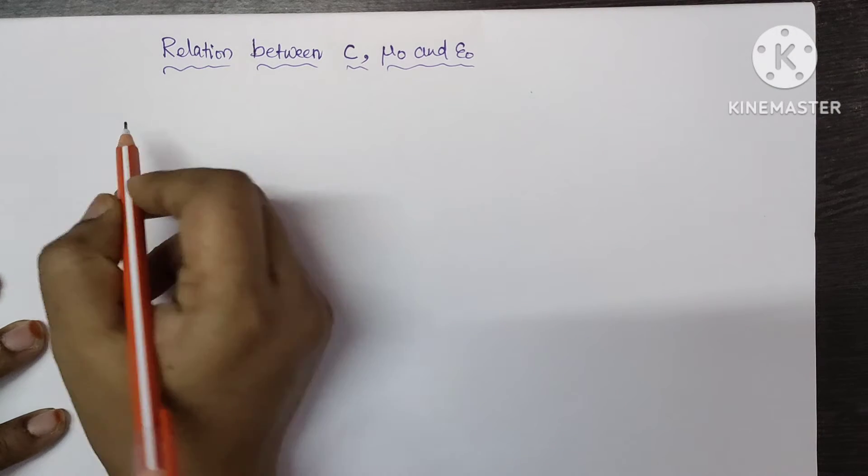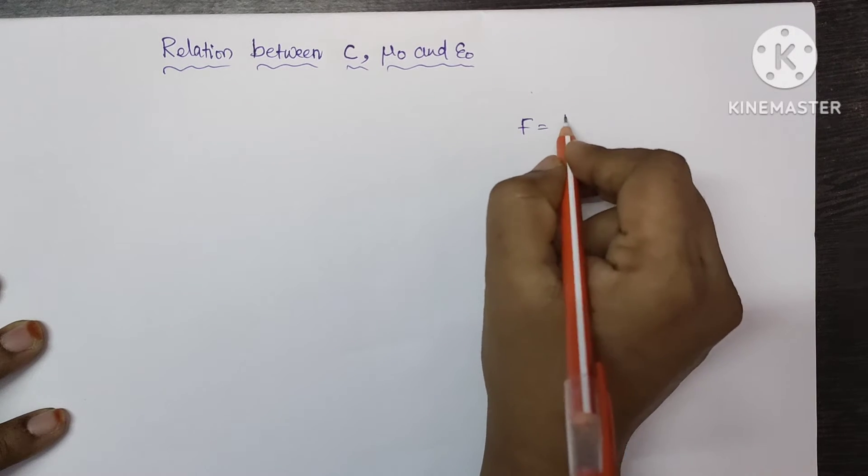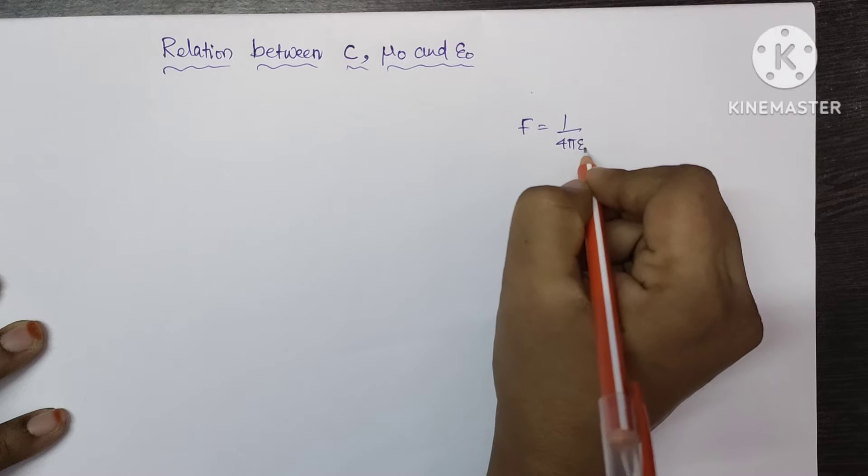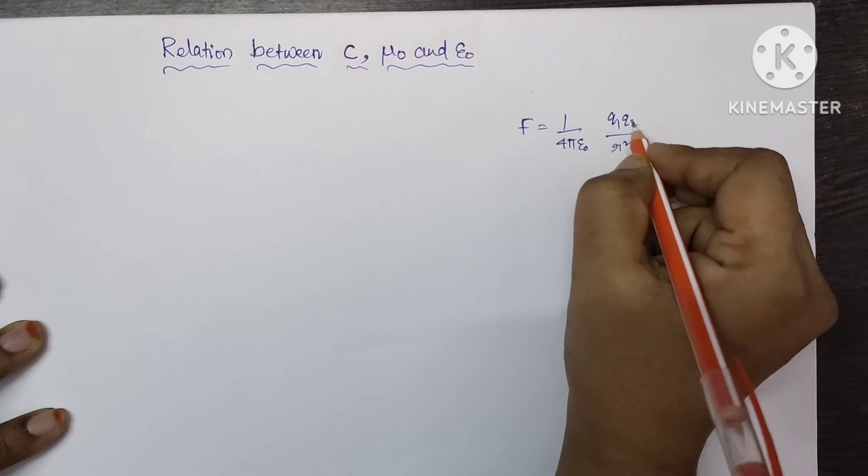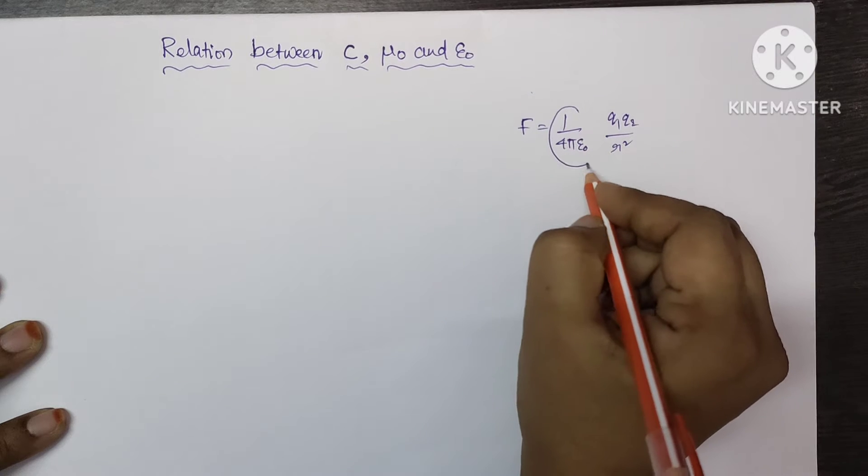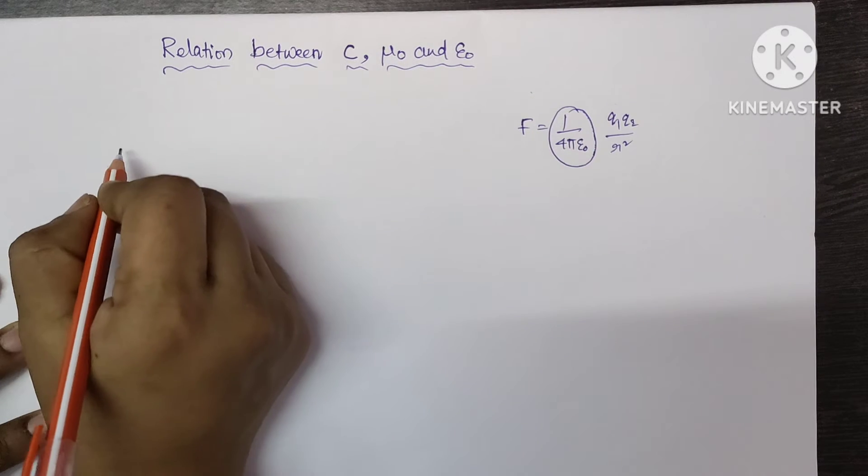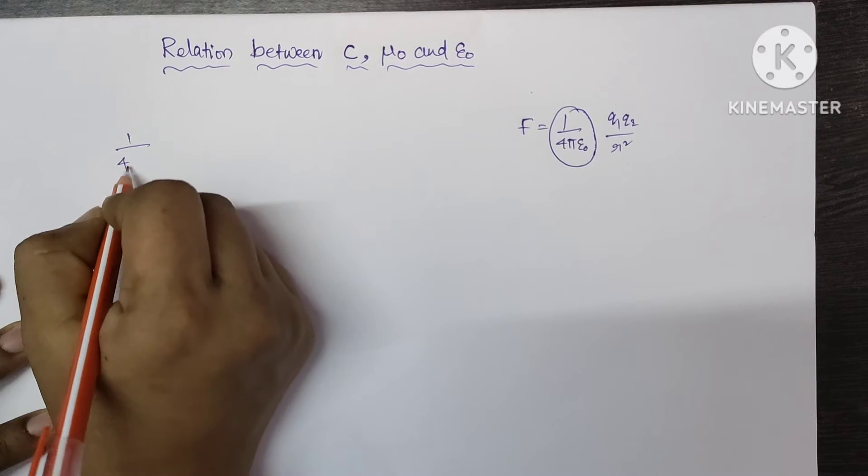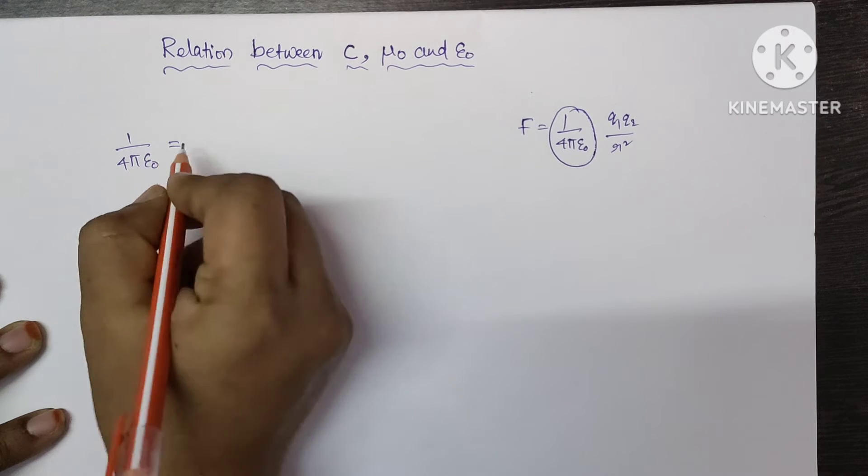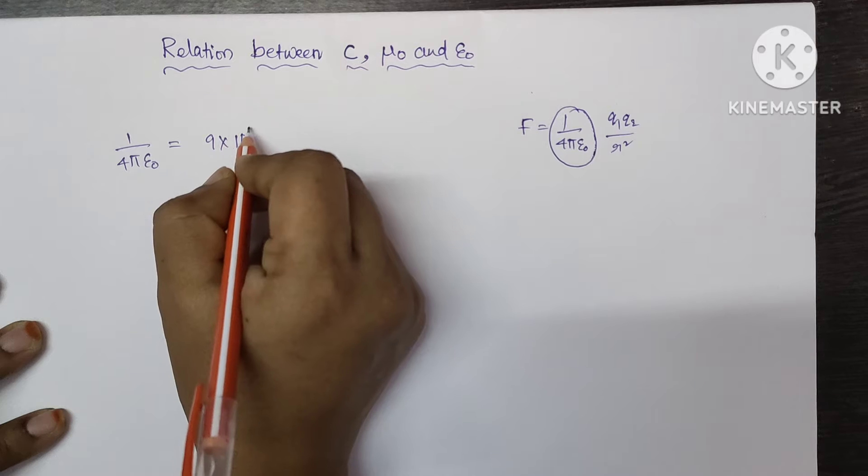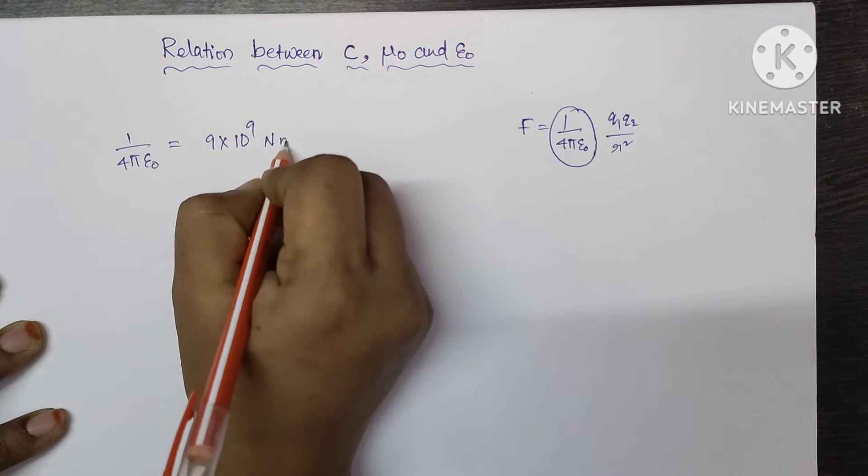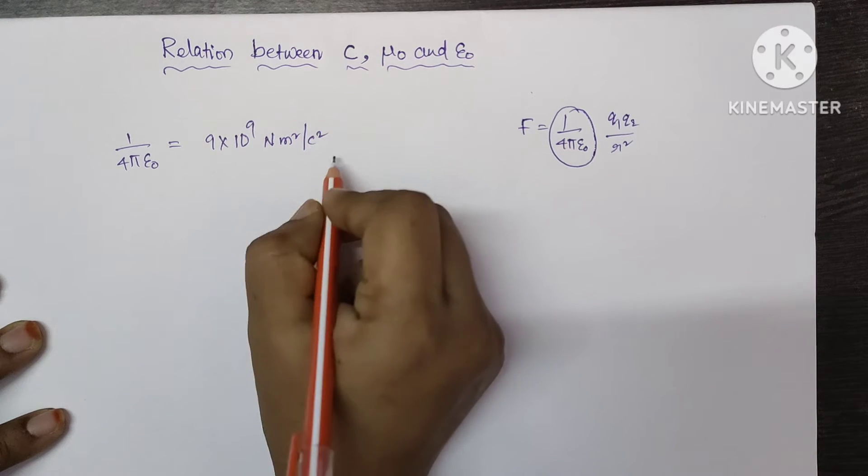Let's see from Coulomb's law we know that f equal to 1 by 4 pi epsilon 0 into q1 q2 by r square. So here 1 by 4 pi epsilon 0 is a constant. Let's take it 1 by 4 pi epsilon 0 equal to 9 into 10 to the power of 9 Newton meter square per Coulomb square.